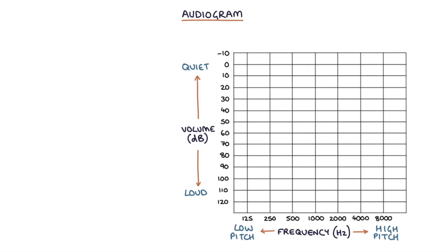Hearing is tested to establish the quietest volume at which a patient can hear each frequency. This level is plotted on the chart. The louder the sound required for the patient to hear, the worse their hearing is, and the lower on the chart they will plot.